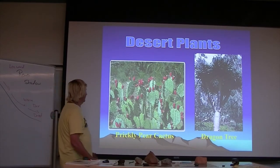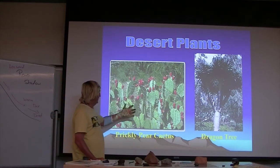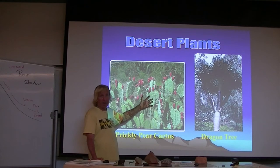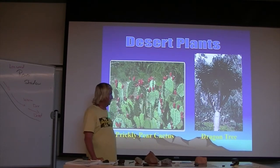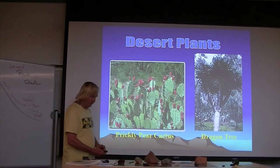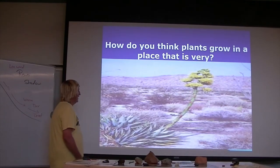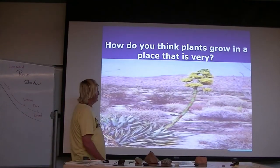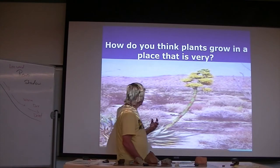There are various cacti including prickly pear, which has no leaves — the green color allows photosynthesis. You also have dragon trees, Joshua trees, and other plants unique to desert environments. There's one plant with a white flower adapted to attract nighttime pollinators.